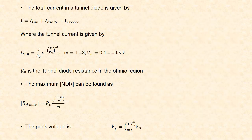The total current in the tunnel diode is given by tunnel current plus diode current plus excess current. The tunnel current is given by I_t0 = (V / R0) × e^(−(V / V0)^M), where M ranges from 1 to 3, V0 ranges from 0.1 to 0.5 volt, and R0 is the tunnel diode resistance in the ohmic region. Maximum negative differential resistance can be found by: Rd_max = R0 × e^((1 + M) / M) / M. The peak voltage is given by Vp = (1/M)^(1/M) × V0.